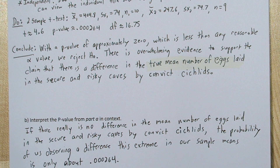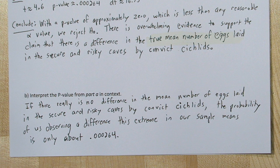For part b, instead of saying approximately zero, we'll use a rounding of our p-value. If there really is no difference in the mean number of eggs laid in the secure and risky caves by convict cichlids, the probability of us observing a difference this extreme in our sample means is only about 0.000264.